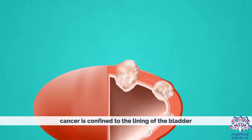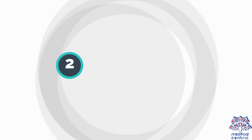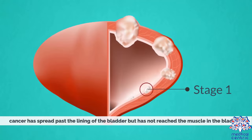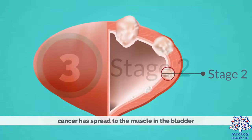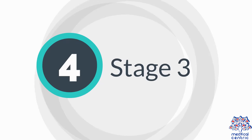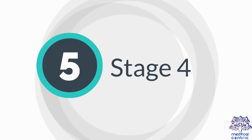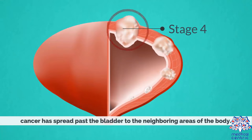Stage 0: cancer is confined to the lining of the bladder. Stage 1: cancer has spread past the lining of the bladder but has not reached the muscle. Stage 2: cancer has spread to the muscle in the bladder. Stage 3: cancer has spread into the tissue surrounding the bladder. Stage 4: cancer has spread past the bladder to the neighboring areas of the body.